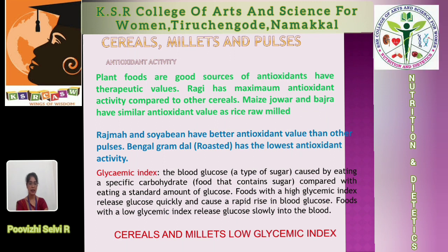Finally, an important part: the antioxidant activity. Plant foods are a good source of antioxidants, having therapeutic value. Ragi has maximum antioxidant activity compared to other cereals. Maize, jowar, and bajra have similar antioxidant value as rice and raw mold. Rajma and soya bean have better antioxidant value than other pulses. Bengal gram dal has the lowest antioxidant activity compared to other roasted and pure raw forms.